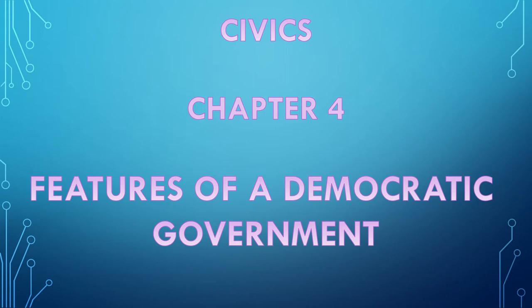Hello children, good morning. Today I am going to start a new chapter in civics — that is Chapter Number Four: Features of a Democratic Government. In this chapter you should know about what is apartheid.